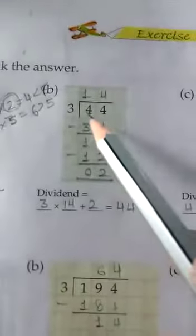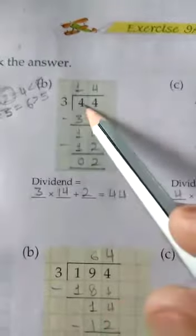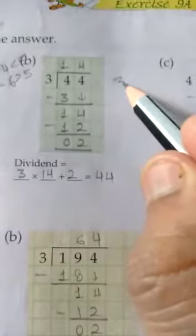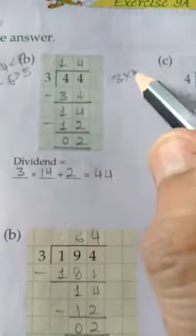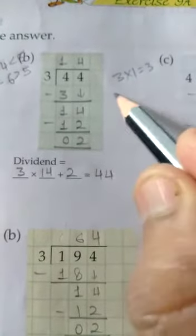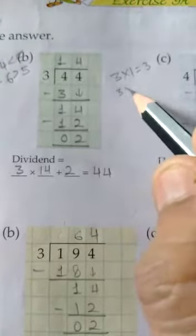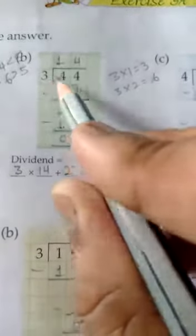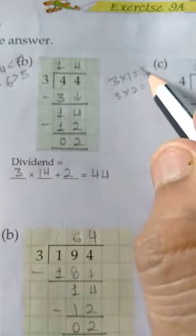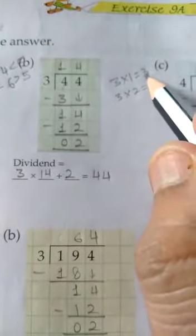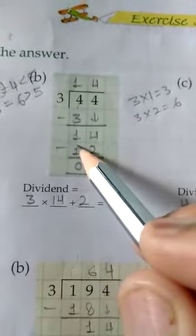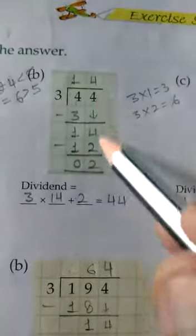Next: 44 divided by 3. First, 4 divided by 3. 3 times 2 is 6, which is greater than 4. And 3 times 1 is 3, which is smaller than 4. So we write 1 in the quotient and 3 here. Subtract: 4 minus 3 is equal to 1. Now bring down 4, so it will be 14.